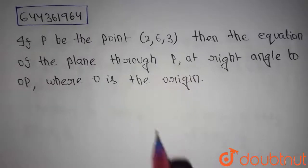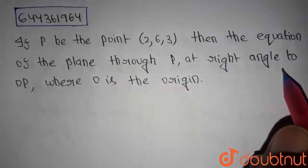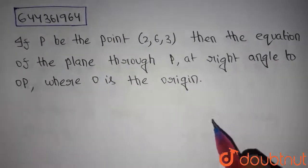Guys, this is our today's question. If P be the point (2,6,3), then the equation of the plane through P at right angle to OP, where O is the origin.